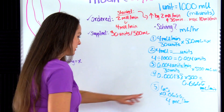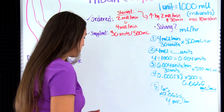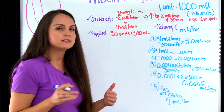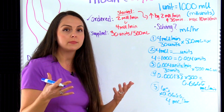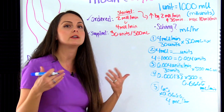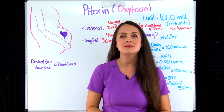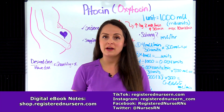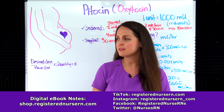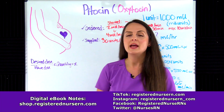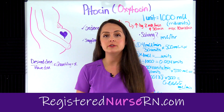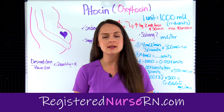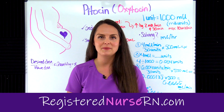If you cleared your calculator, you might have gotten something like 3.996 — you would round to the nearest whole number, which is four. That wraps up this video on how to solve Pitocin dosage calculations using the desired over halve formula. If you want more practice on these problems, you can access a free quiz on my website via the link in the description below.